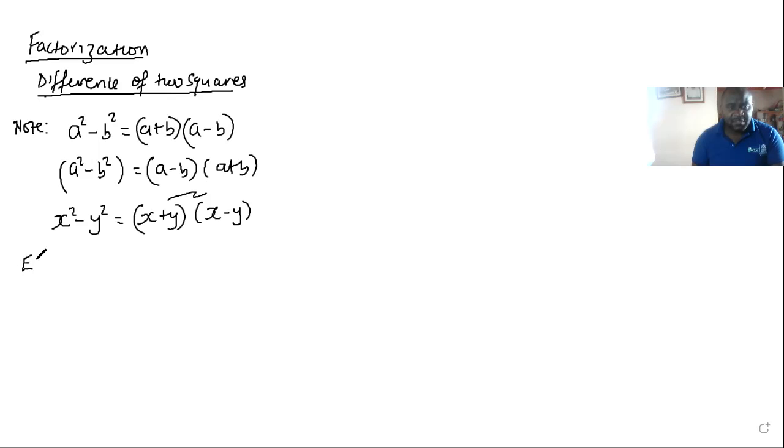So for examples on this method, we can say if I have, for example, factorize the following expressions. And the first expression, Roman one, is if I'm factorizing x squared minus 4y squared.